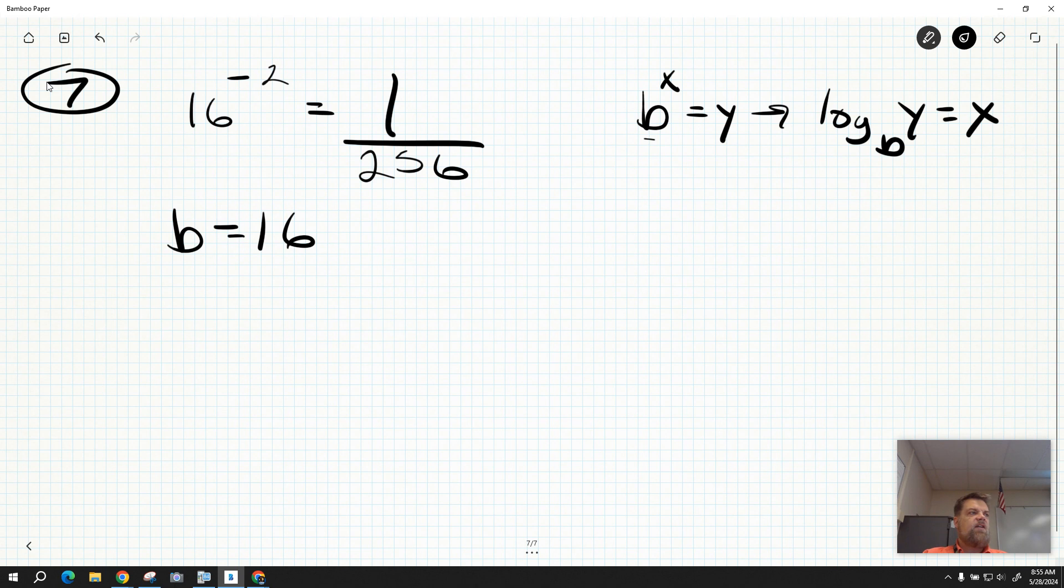Next, we've got to identify what X is. What's X? X is the exponent. In this case, negative 2.